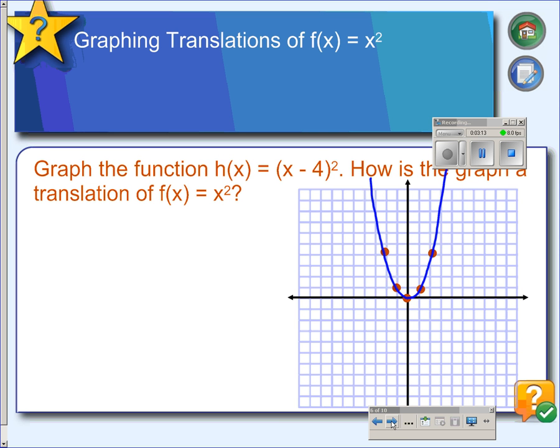Another transformation that could take place is one like this where you have x minus 4 in parentheses. So in the order of operations, we would subtract 4 first and then square it. But that transformation ends up making your graph go to the right 4 units. And I know it seems unusual that it would go to the right. But if you try some calculations on your own, you will find out that it actually does go to the right.